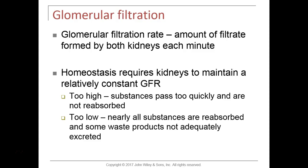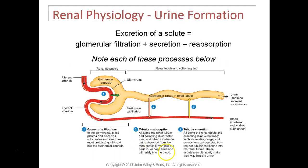GFR is the amount of filtrate that both kidneys produce in one minute. It must be regulated precisely: if GFR is too high, filtrate moves through the renal tubule too quickly and we lose needed substances to urine. If GFR is too low, we reabsorb too many substances back into the blood and don't adequately get rid of waste. What drives filtrate through the renal tubule is the formation of more filtrate pushing it forward — there's no pump.